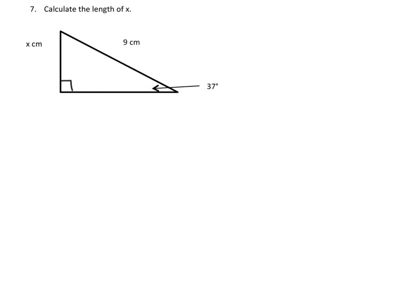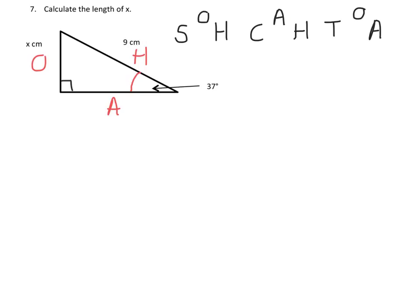Question 7 in the calculator section asks us to calculate the length of x on a right-angled triangle. This is a trigonometry question. We are given an angle of 37 degrees. Labelling the triangle: the side opposite the angle is the opposite, the 9cm side is the longest so it's the hypotenuse, and the other side is the adjacent. We write down SOH-CAH-TOA.